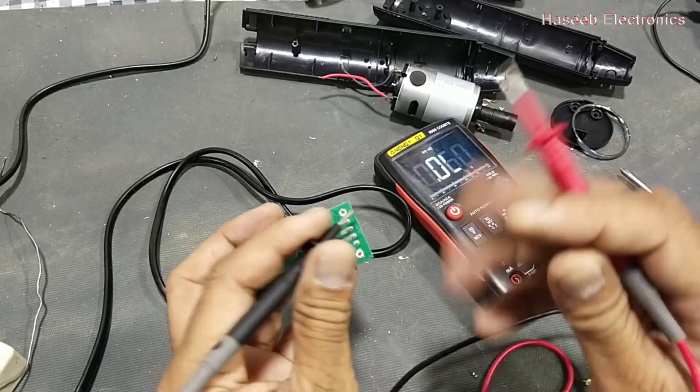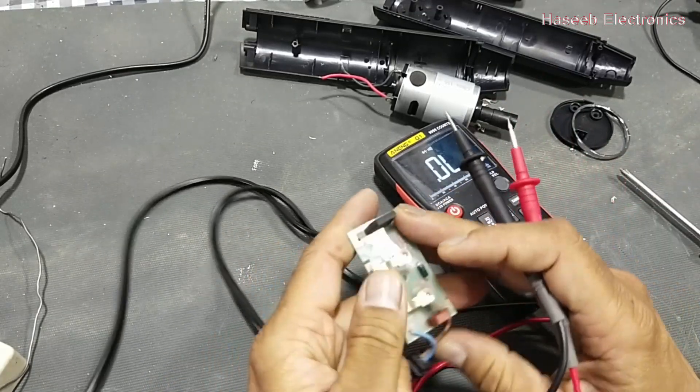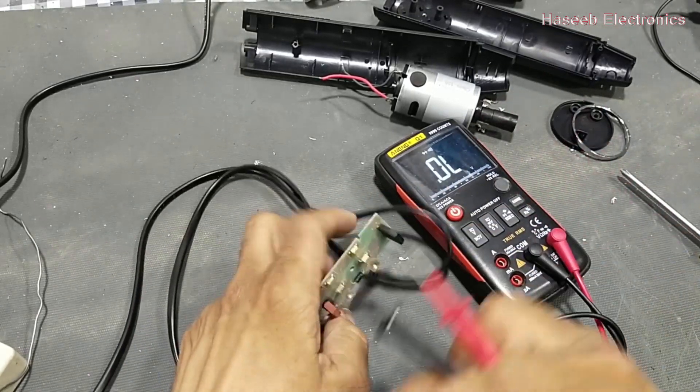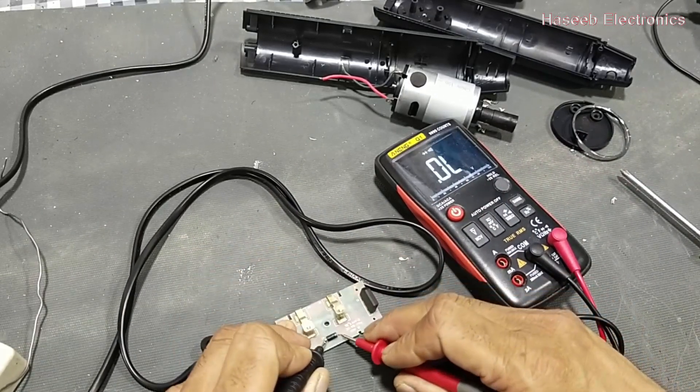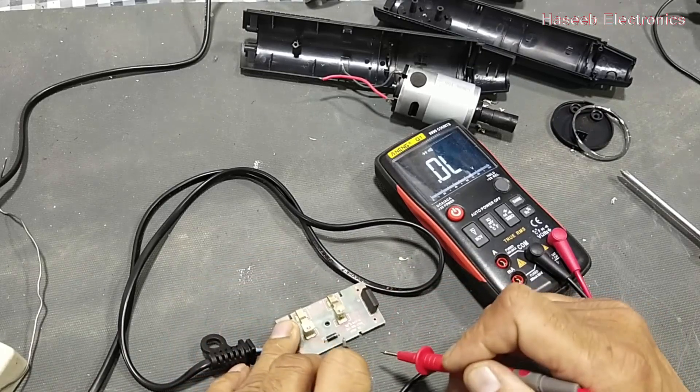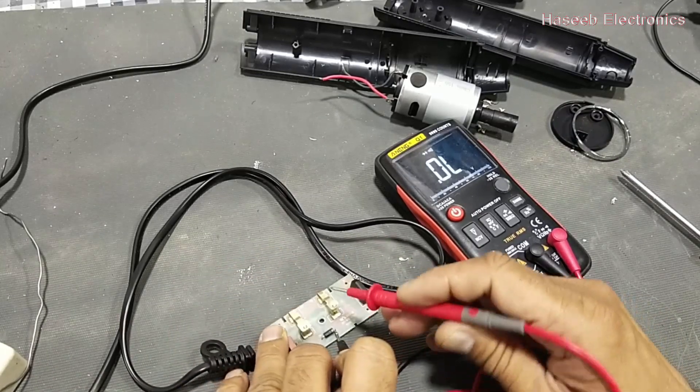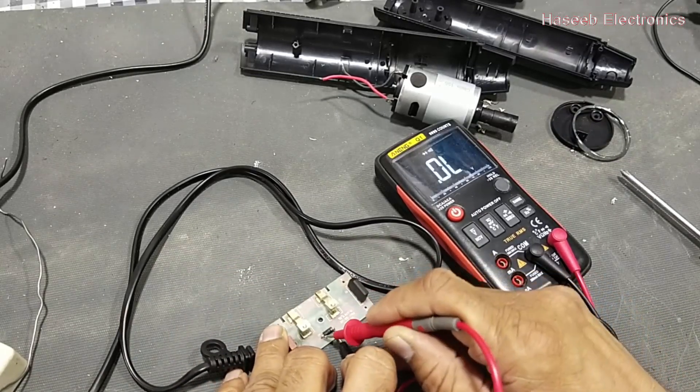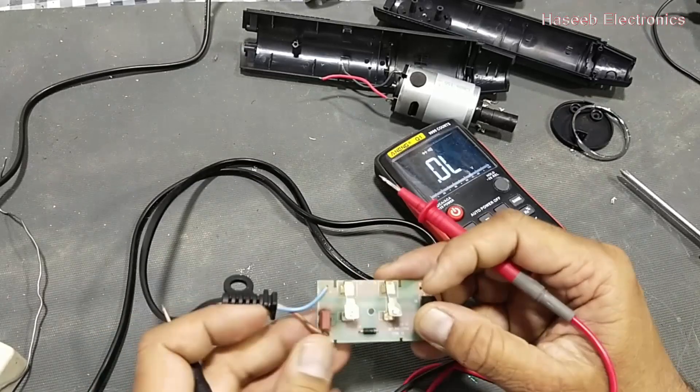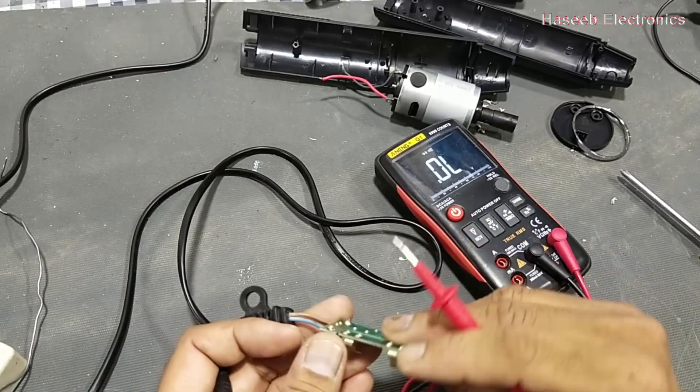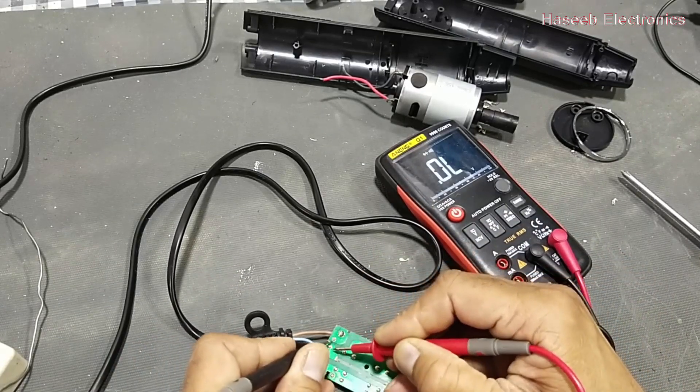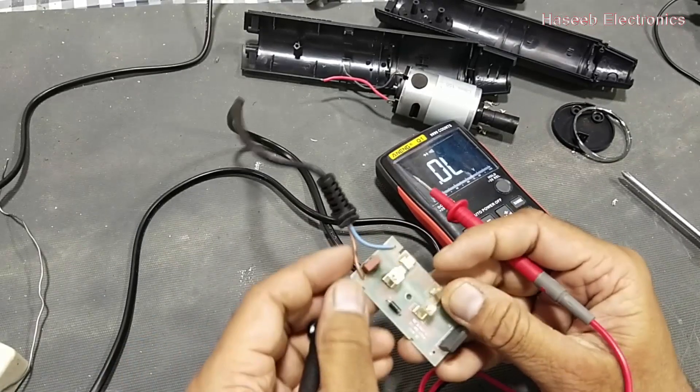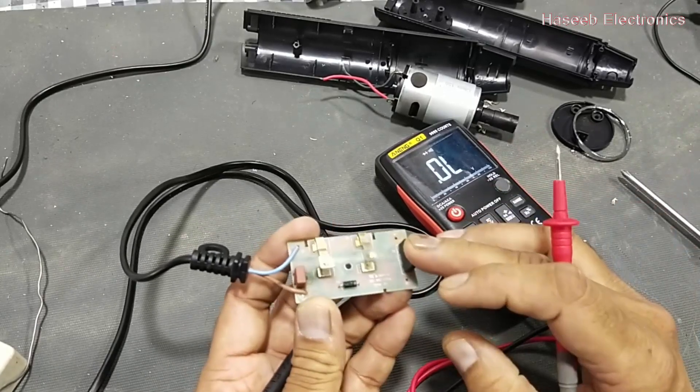So this bridge is short circuit. Now we have this rectifier, it is... yes it's good. Then we have a fuse here. Fuse must be open. Fuse is open. Yes, fuse and the bridge rectifier are bad, we have to replace.